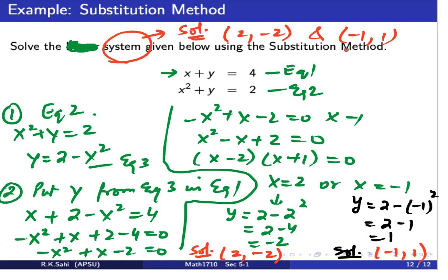This is a scenario where we do not have a linear system. When you have a linear system, there are always exactly three possible ways for solutions: unique, no solution, or infinite solutions. But once you don't have a linear system, you cannot guarantee what kind of solutions you will see. Thank you.